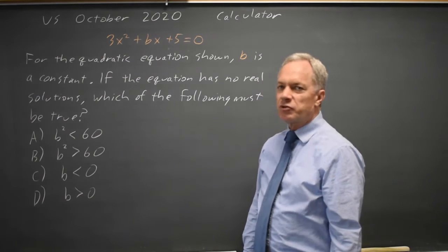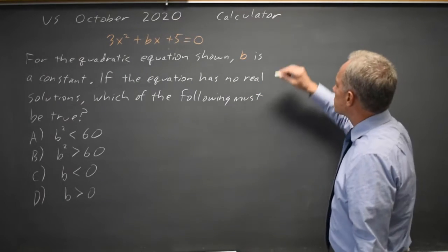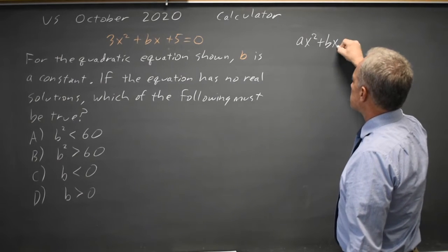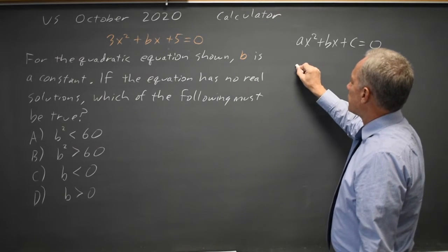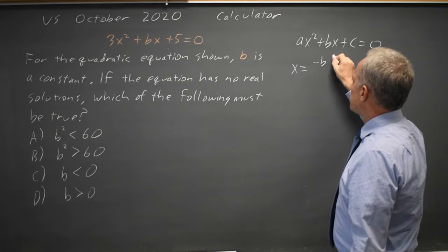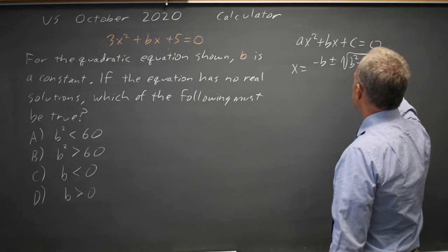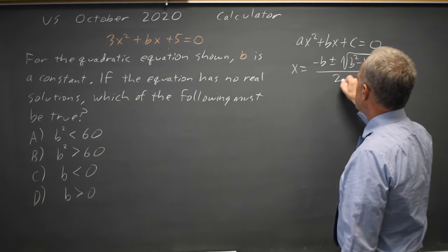And for quadratics with no solution, we should remember the discriminant. Ax squared plus Bx plus C equals zero. The values are x equals negative B plus or minus square root B squared minus 4ac all over 2a.